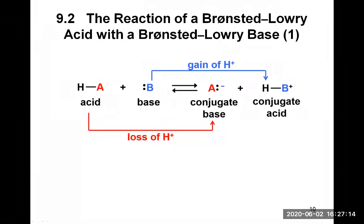This video will cover section 9.2, the reaction of a Brønsted-Lowry acid with a Brønsted-Lowry base. Here we have the generic form of an acid-base reaction according to the Brønsted-Lowry theory. The acid is symbolized by HA and the base by B with the lone pair. The acid-base reaction is the transfer of a proton from the acid to the base.